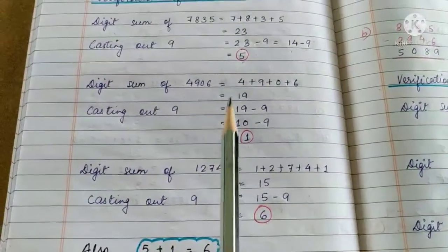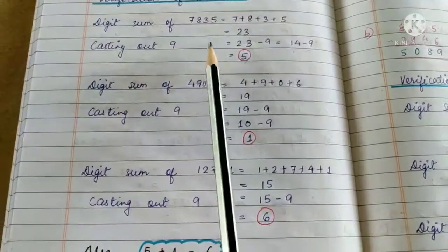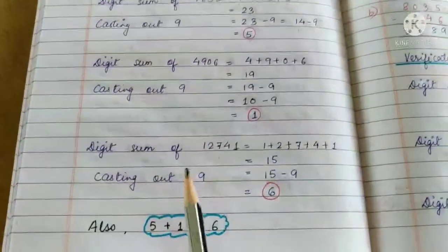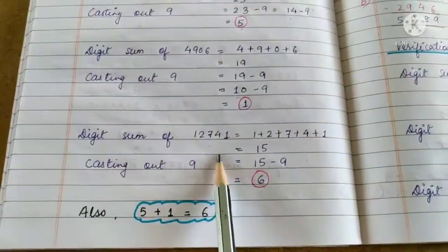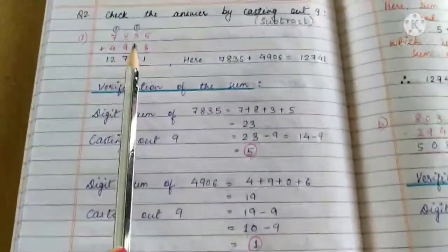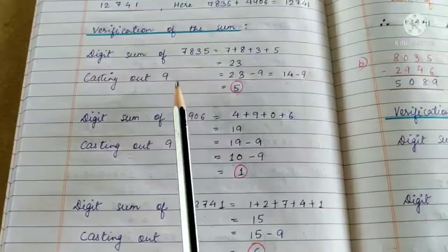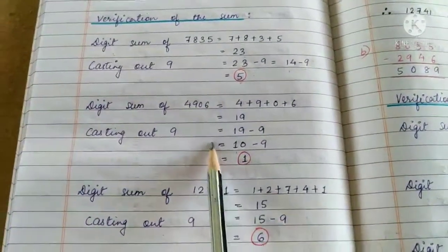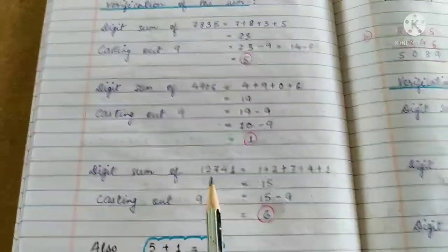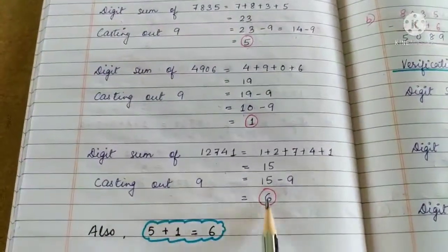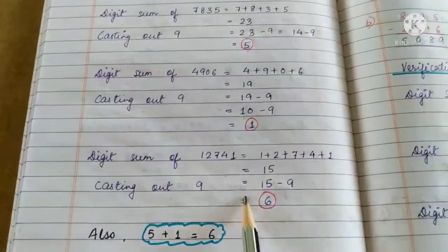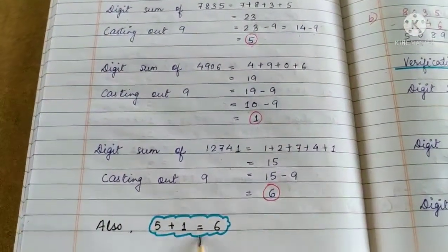So when we have the digit sum of the two addends equal to the digit sum of the sum—as in, when we add these two addends we get the sum—similarly, jab hum digit sum nikalte hain dono addends ka, agar wo plus karne par answer ke digit sum ke barabar aata hai, that means our answer is correct. So 5 + 1 = 6.